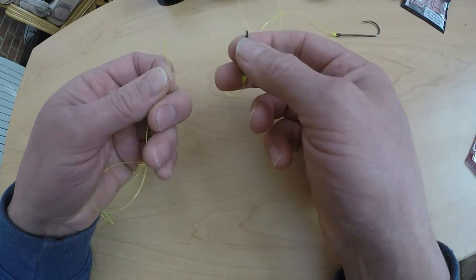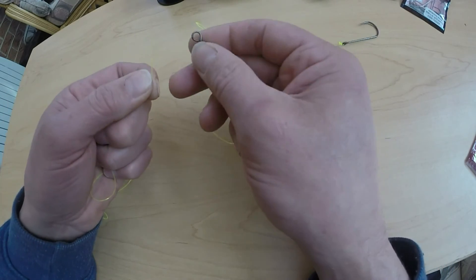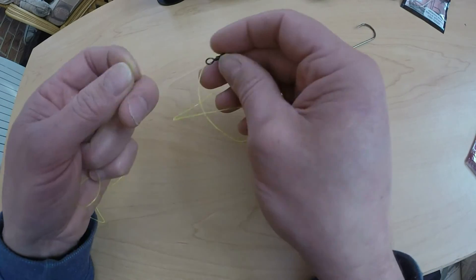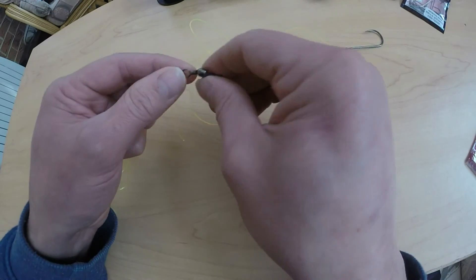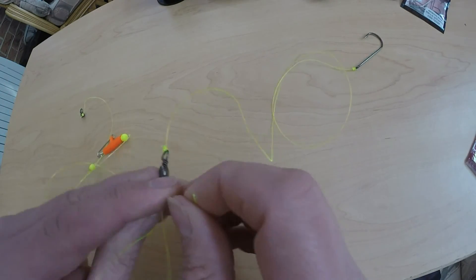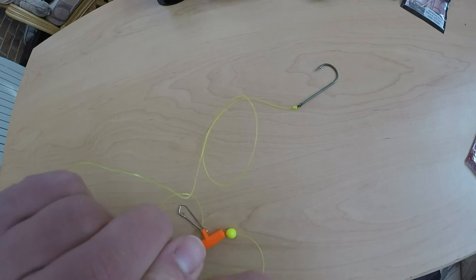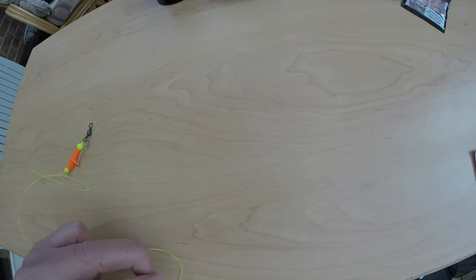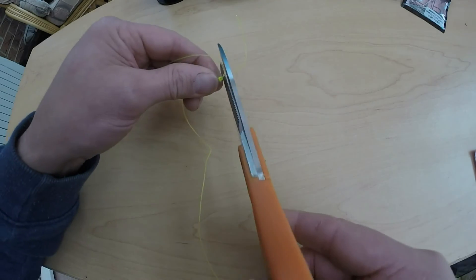Right, now we need to tie that end onto the rig, the swivel with the hook on that we did earlier. So I'll just tie that on. I'll just cut the tag end off.